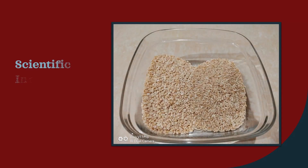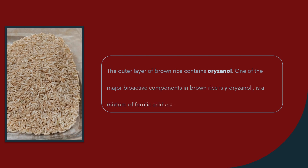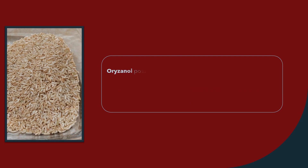Let's see the scientific information of brown rice. The outer layer of brown rice contains oryzanol. One of the major bioactive components in brown rice is gamma oryzanol. It is a mixture of ferulic acid esters with phytosterols. Oryzanol possesses a variety of biological properties, including cholesterol lowering,